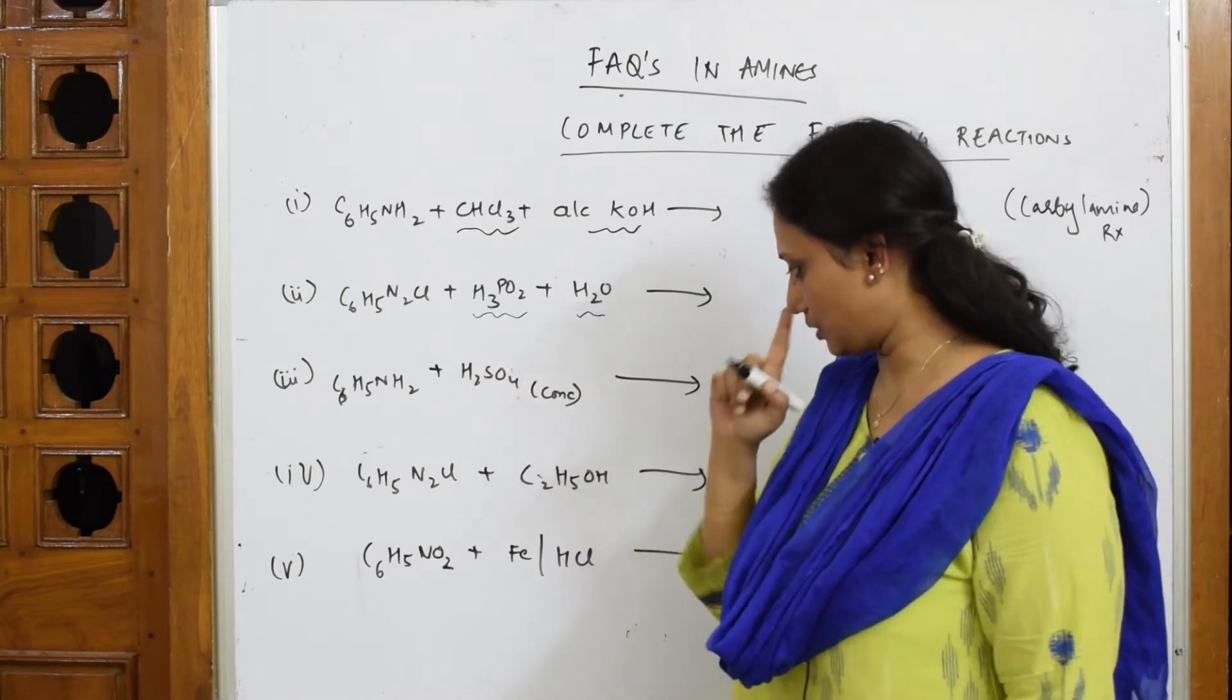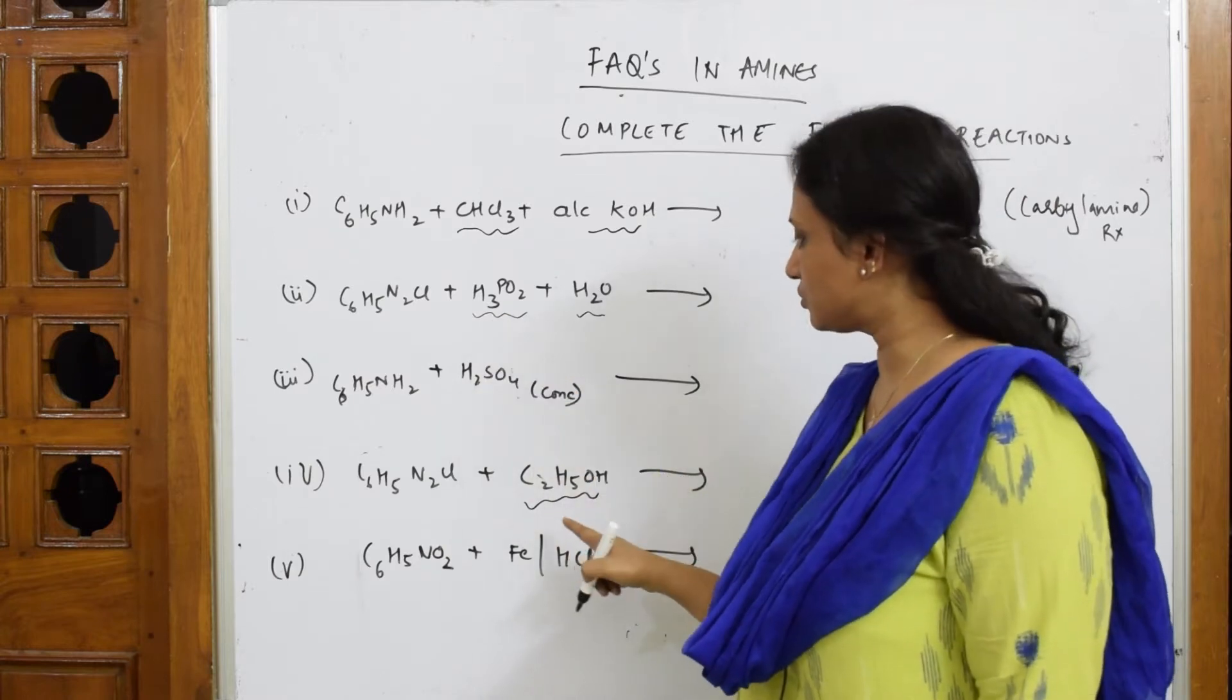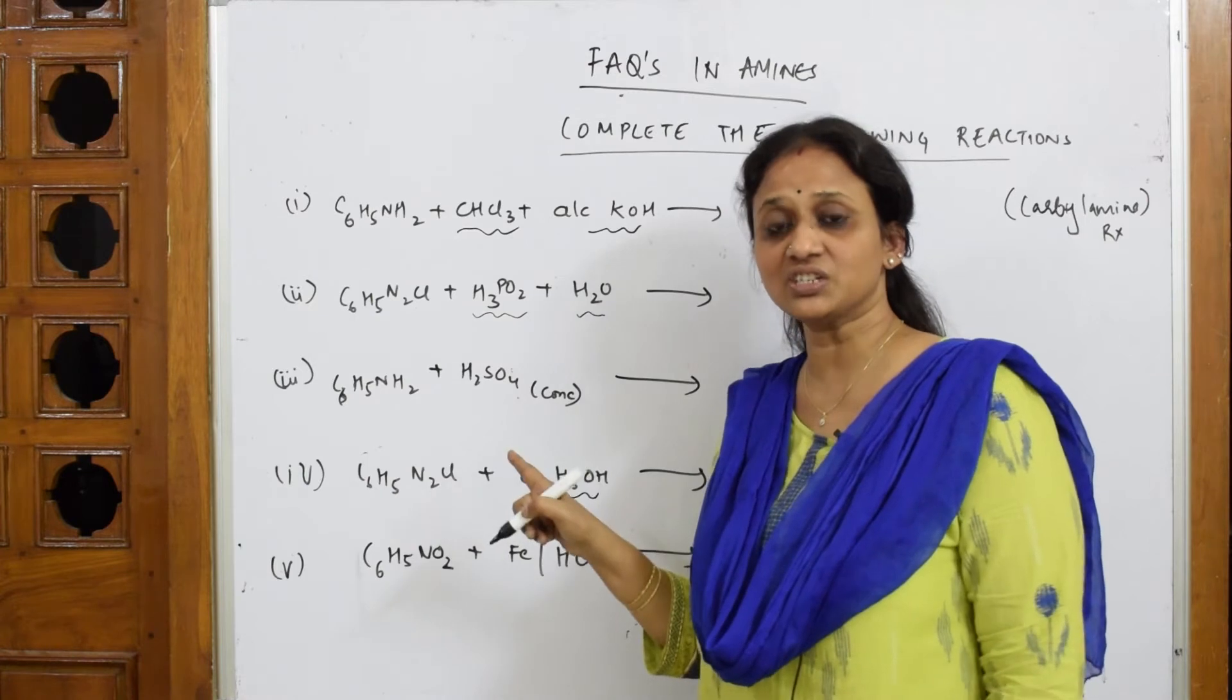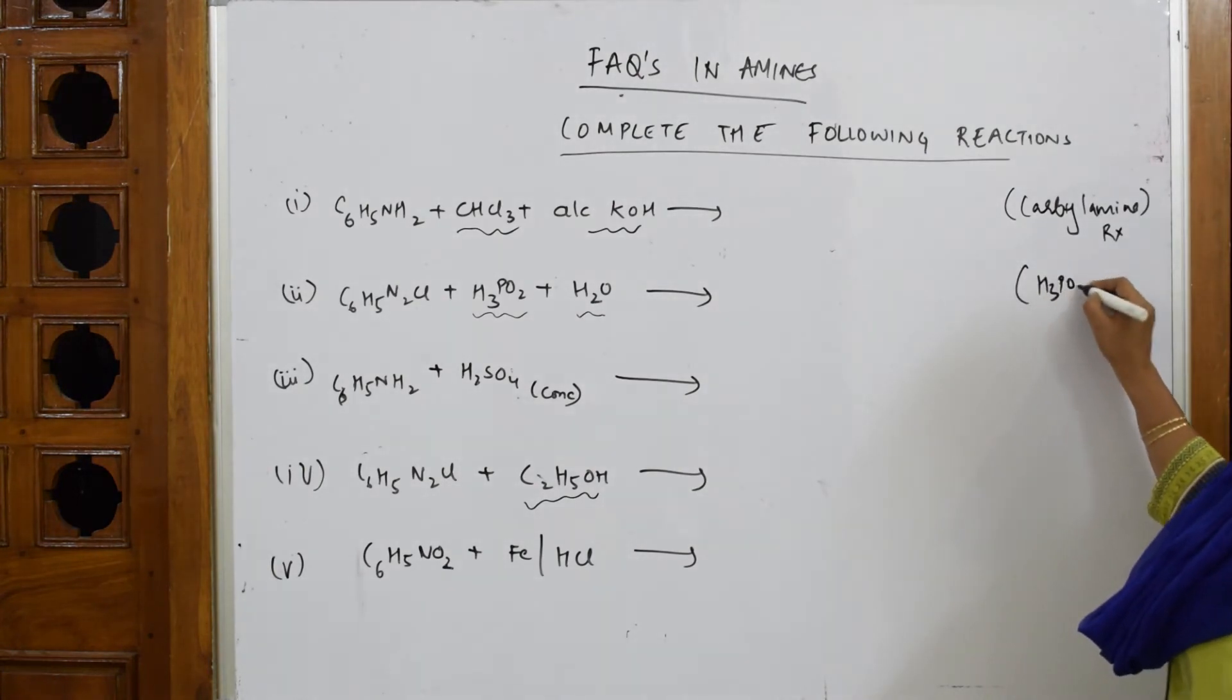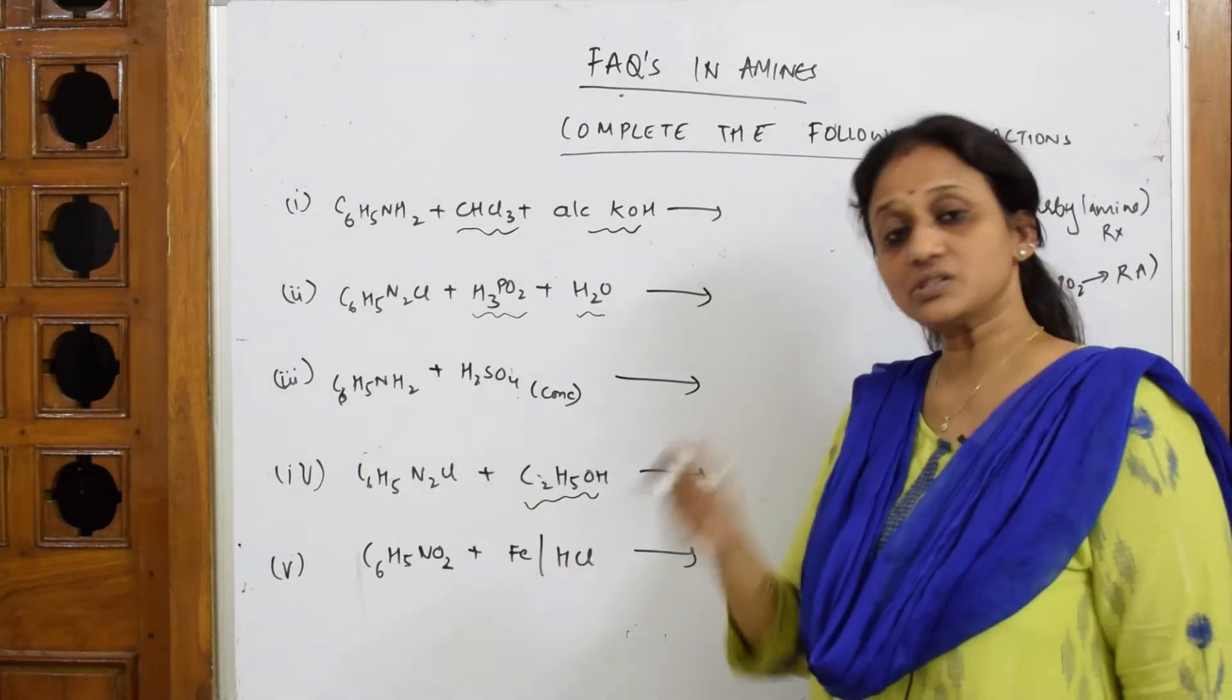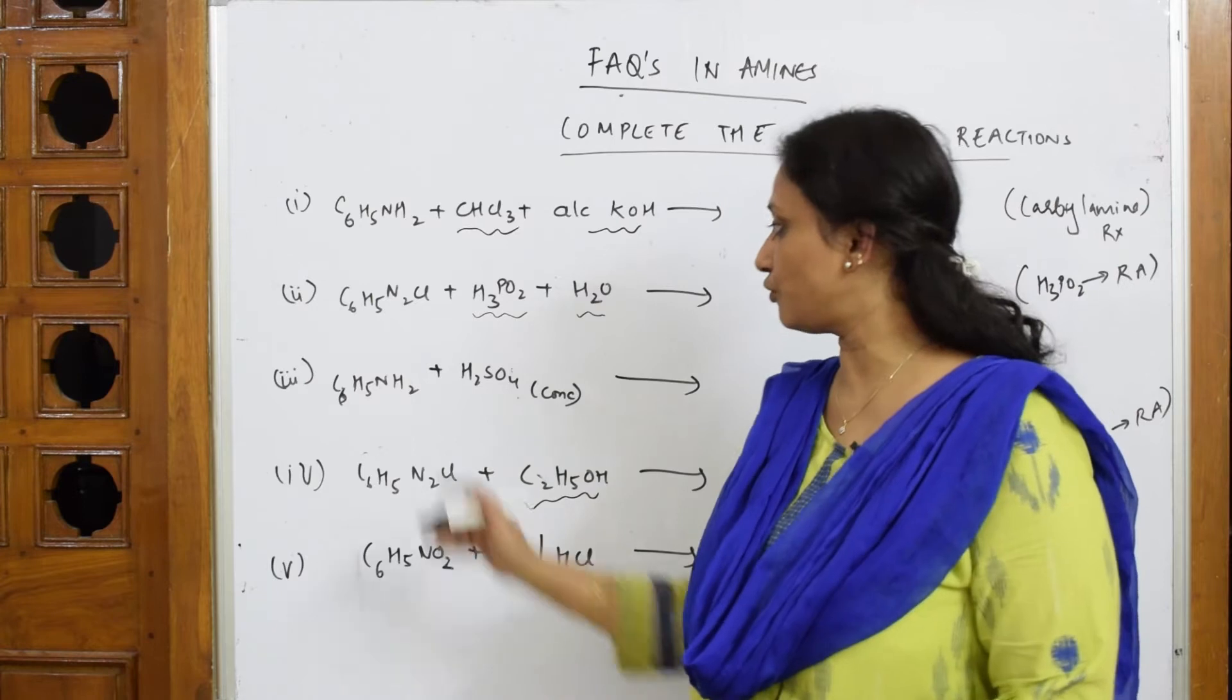Next, what are we seeing here? H3PO2 and water, and one more, ethanol. Both H3PO2 and ethanol are reducing agents. I have already done this question under BDC reactions. So remember, H3PO2 is a reducing agent and ethanol also is a reducing agent.